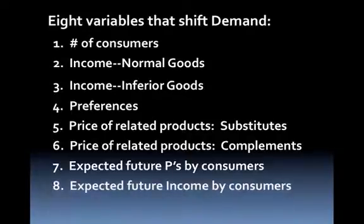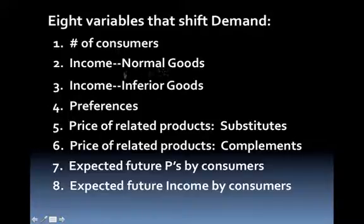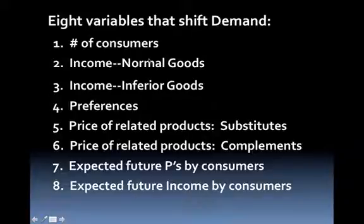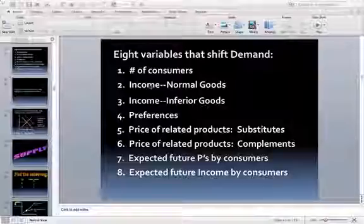The eighth and last determinant is expected future income by consumers. If you think you're going to get a raise, demand for products tends to increase — typically normal goods. We see this when people get out of college: they tend to buy new cars and a house because they're expecting their income to go up. If you think you're going to get fired or laid off, demand in general tends to decline — a shift to the left. That was the eight determinants of demand. We'll talk about this more in class tomorrow or the next day.